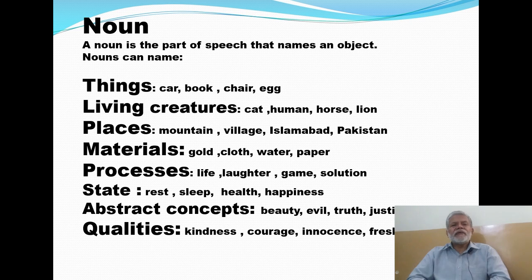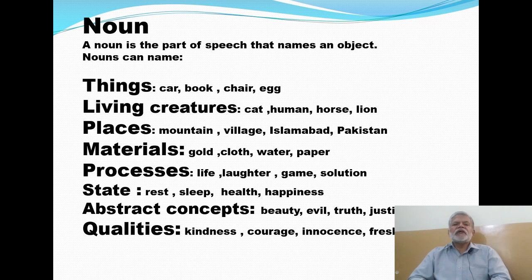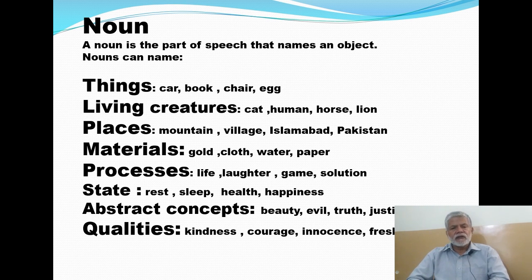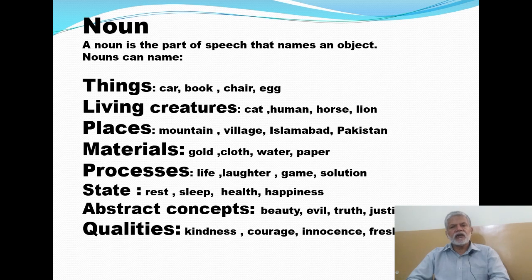The names of places are also nouns: mountain, village, Islamabad, Pakistan, other countries, other cities, school, college, academy, hospital, office — these are all names of places. Then there are materials — different materials we use to make different things. The names of those materials are also nouns: gold, iron, silver, cloth, water, paper, milk — all these are materials and their names are nouns.